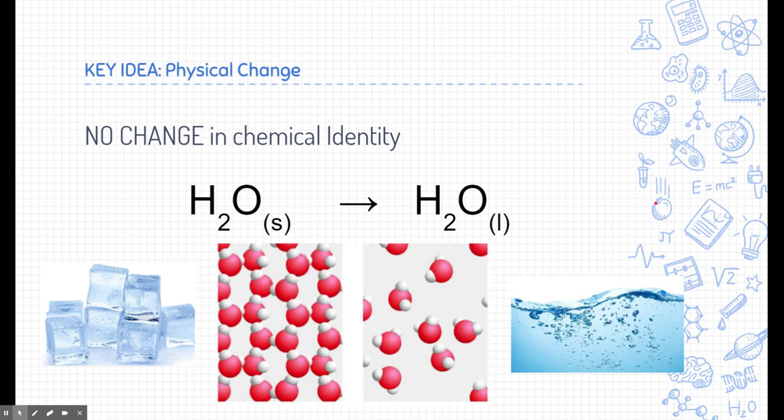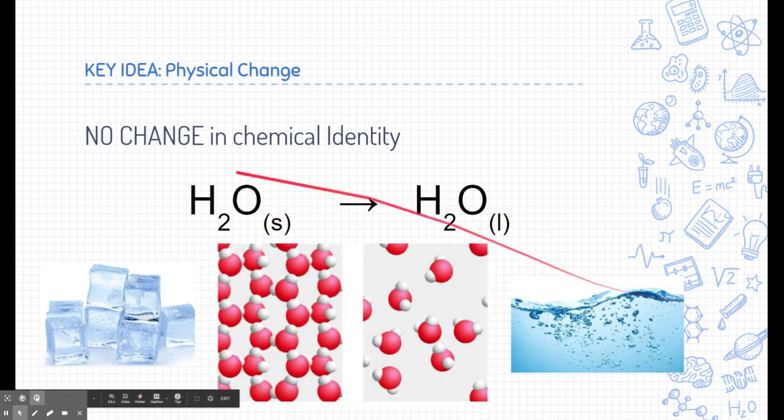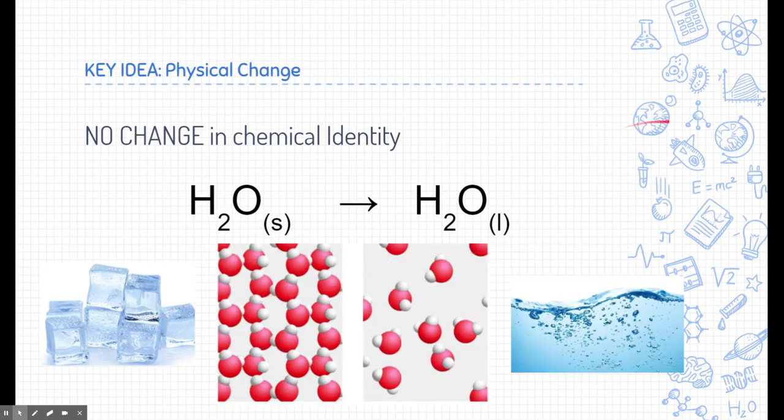So here's kind of the key idea. Physical changes have no change in the chemical identity, right? For example, melting this water molecule starts off at water, still ends up as water. It just doesn't matter what phase it is in.